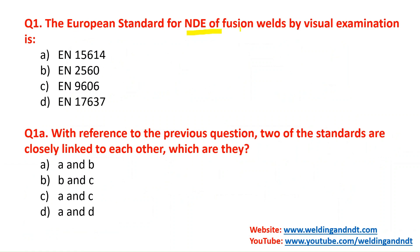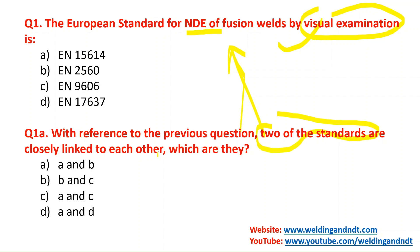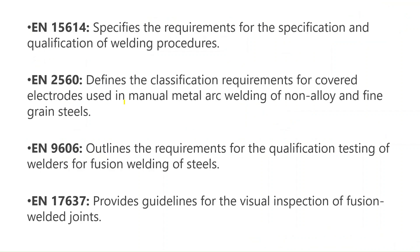Our first question is: the European standard for NDE of welds by visual examination — four codes are mentioned and they have asked which code is applicable for visual examination. The second question is, with reference to the previous question, which two of the four standards are closely linked to each other?